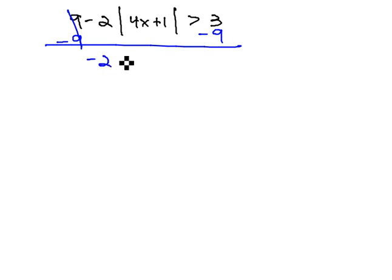As we do, we get negative 2 times the absolute value of 4x plus 1 is greater than negative 6.